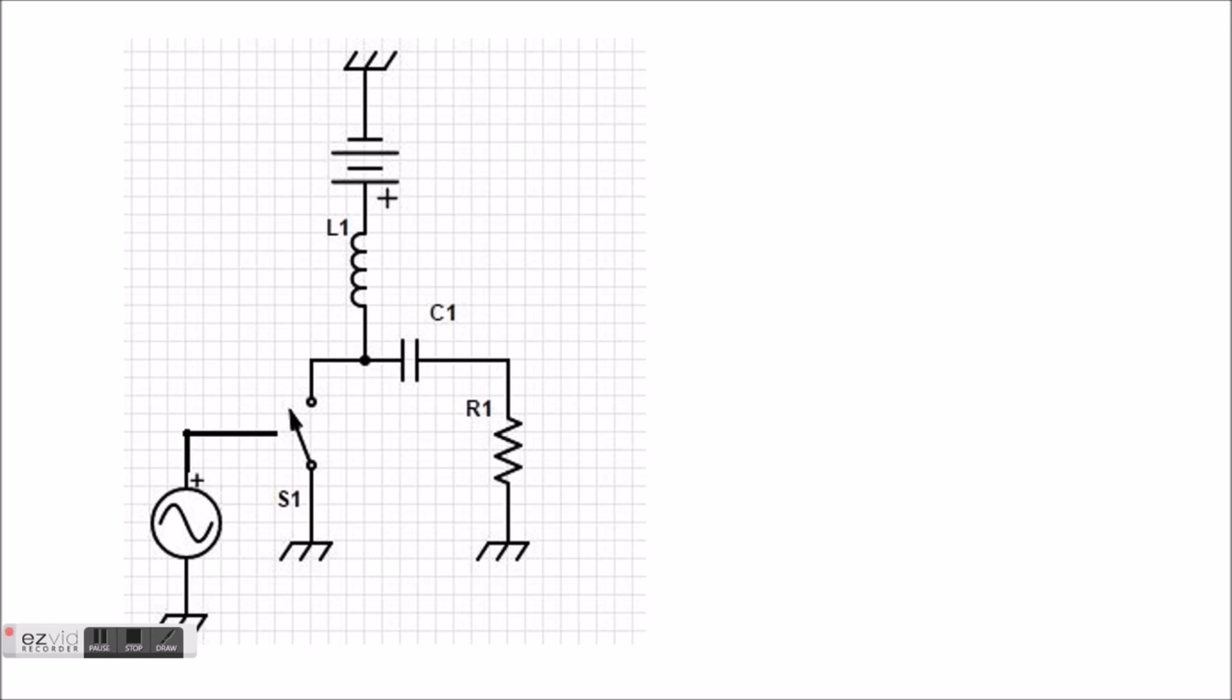For starters, a Class E amplifier is a switching mode amplifier. As opposed to the conventional classes of amplifiers, a switching mode amplifier models the FET as an on-off switch. If designed correctly, this switch would open and close with a perfect 50% duty cycle. It would be closed during the positive cycle and opened at the negative cycle.